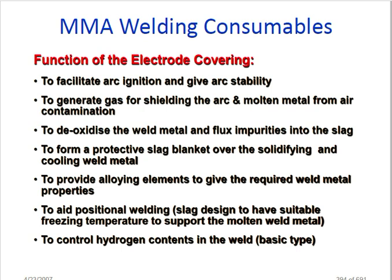To provide alloying elements to give the required weld metal properties — the flux contains alloy elements and many chemicals, and when the metal is melting the flux also melts, giving good welding quality. To suit all-position welding — slag is designed to have a suitable freezing temperature to support the molten weld metal. To control hydrogen content in the weld — this is very important, as high hydrogen content can cause hydrogen cracking.